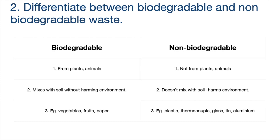Examples of biodegradable waste would be vegetables, fruits and paper. Non-biodegradable waste would be plastic, thermocool, glass, tin and aluminium.